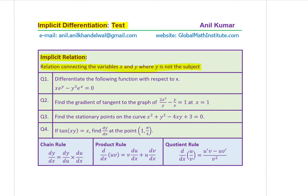In implicit differentiation we will be using the chain rule: dy/dx equals dy/du times du/dx. We will use the product rule: d/dx of uv equals v times the derivative of u plus u times the derivative of v. And the quotient rule: d/dx of u/v equals the derivative of u times v minus u times the derivative of v, all over v squared. You can pause the video, copy these questions, answer them, and then look at my suggestions.